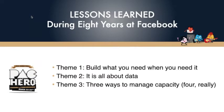Theme one: build what you need when you need it, or buy when you don't have to build things — stay inside your core competence. Theme two: it's all about data. If you want to run things at the scale of billions of users, you really have to have easy access to data, know what to collect, and know how to do it correctly. Finally, I'll talk about three — technically four — ways to manage capacity.